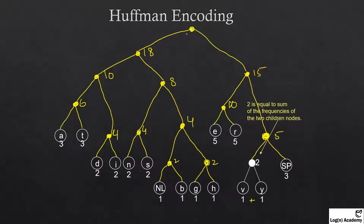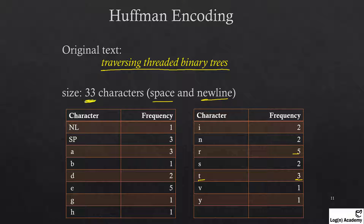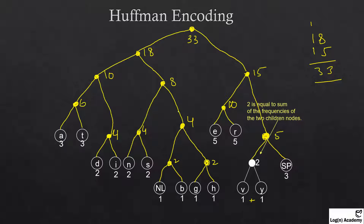At the end, 18 plus 15 gives us 33 — and if you remember, the total number of characters in our phrase including spaces and newline was 33. So we have connected all nodes and the root node equals the total character count. This is the tree we need to form, and we must take care that the root node equals the total number of character occurrences.